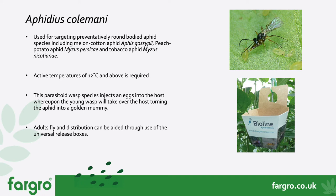The adult wasps search through the environment for aphid hosts, homing in on the honeydew released during aphid feeding. Once they've located the host, they inject an egg using their ovipositor. The egg develops over the course of two weeks, turning the aphid into a golden mummy colour. The fully developed wasp then eats its way out of the aphid, cutting a round hole in the body. These mummies are quite distinctive during crop walking and indicate good levels of parasitization. The adults then emerge and fly through the local environment searching for further hosts.